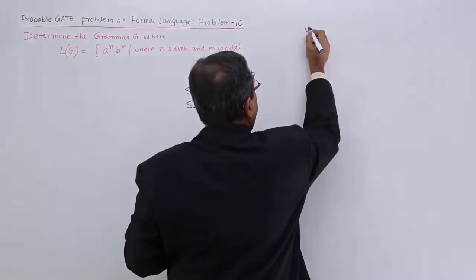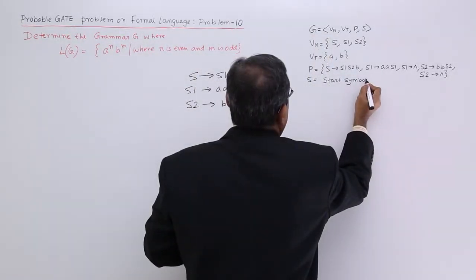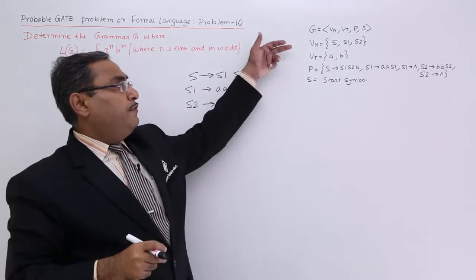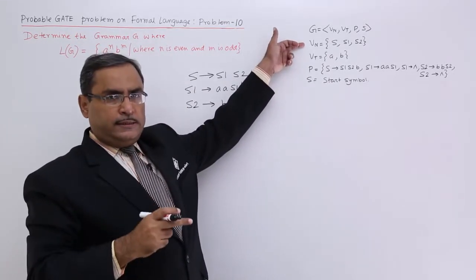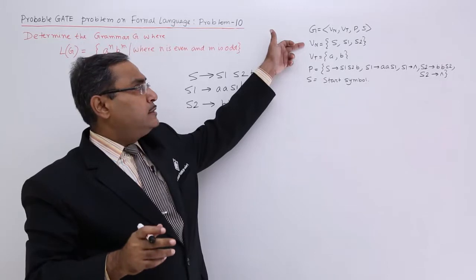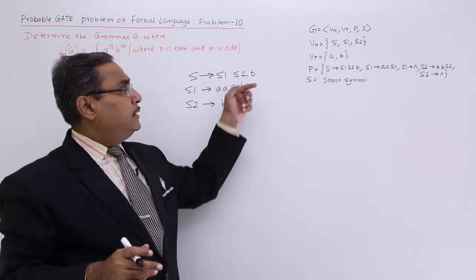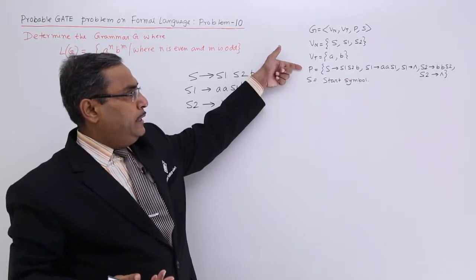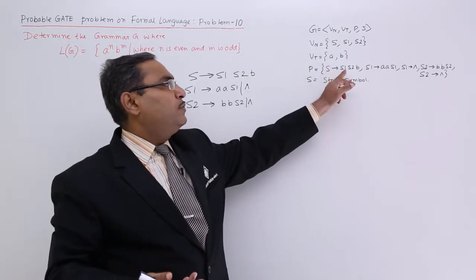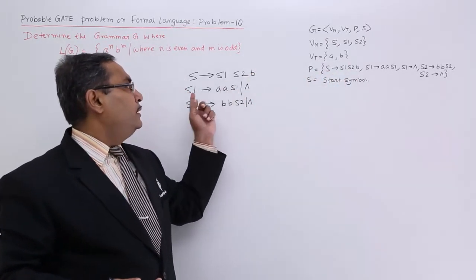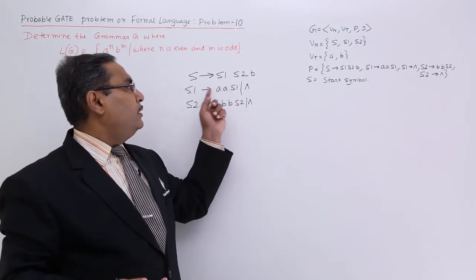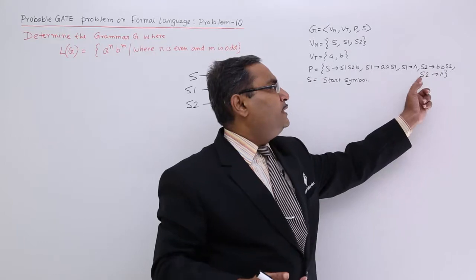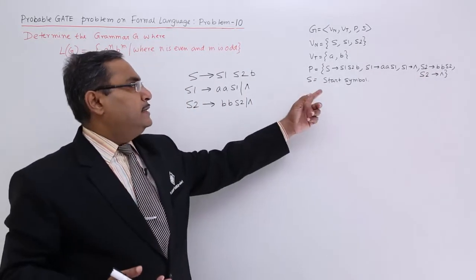Let me write the grammar. In this way the grammar can be defined. I have defined the V n: S, S1, S2 are the non-terminals. I have written them in the capital letters. And then V t there will be nothing but a and b only. Then P is having S produces S1 S2 b. I have written this one: S1 produces A A S1, S1 produces kappa. Similarly, S2 produces B B S2 and S2 produces kappa, and S is the start symbol. In this way the grammar can be defined.